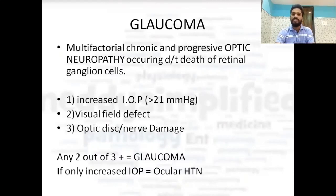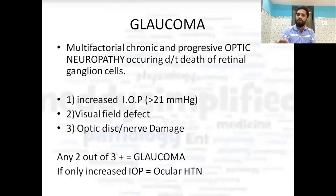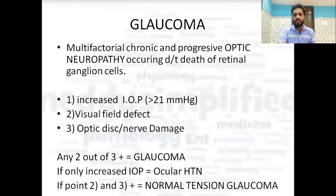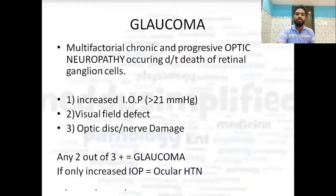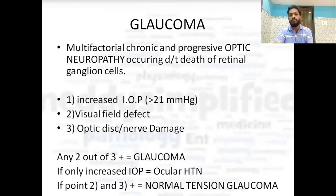Increased intraocular pressure alone is not glaucoma — it is termed ocular hypertension. Increased IOP along with visual field defect or optic disc damage may be defined as glaucoma. If IOP is normal but visual field defect and optic disc damage are both present, it is called normal tension glaucoma.